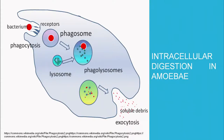The lysosome then releases enzymes into the phagosome, making it a phagolysosome. Ingestion has taken place in the first step; now digestion occurs with the help of enzymes. All required nutrients are taken up by the cell, and waste is expelled through exocytosis. As we can see in the amoeba, all five steps of digestion are carried out by a single cell.